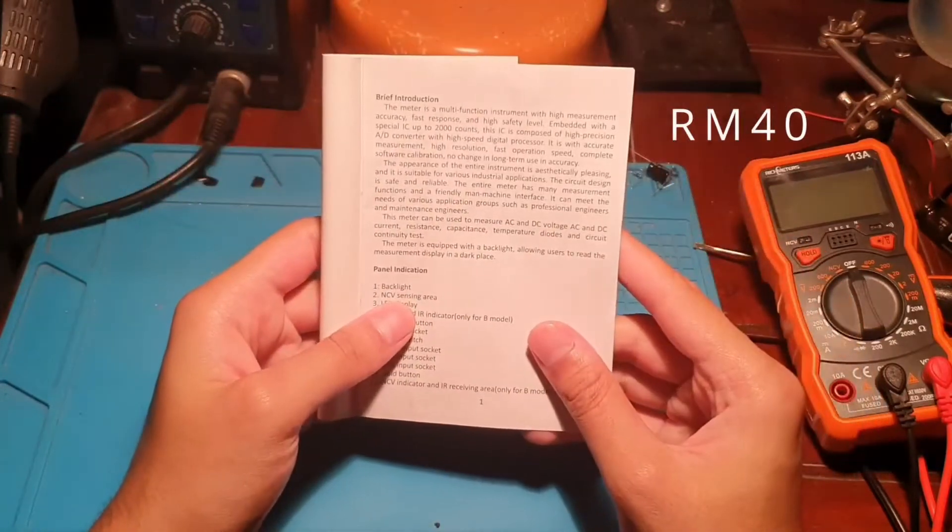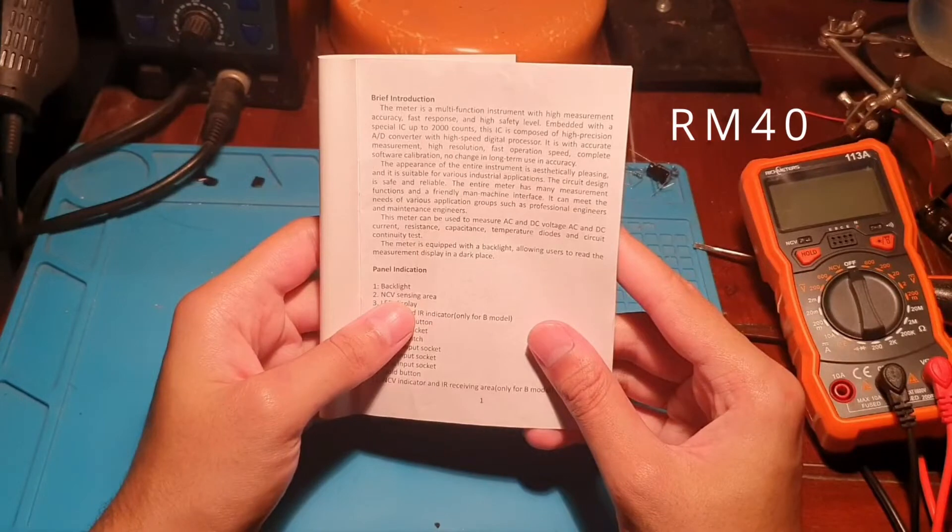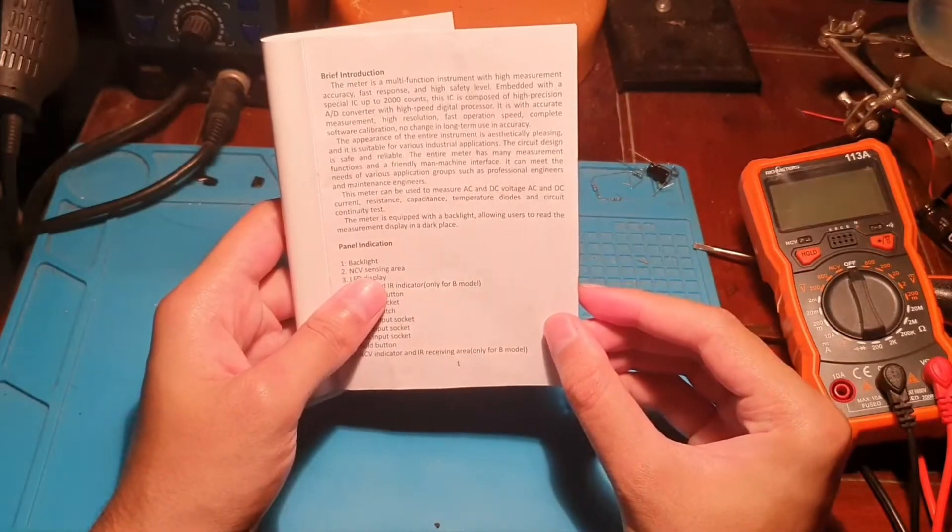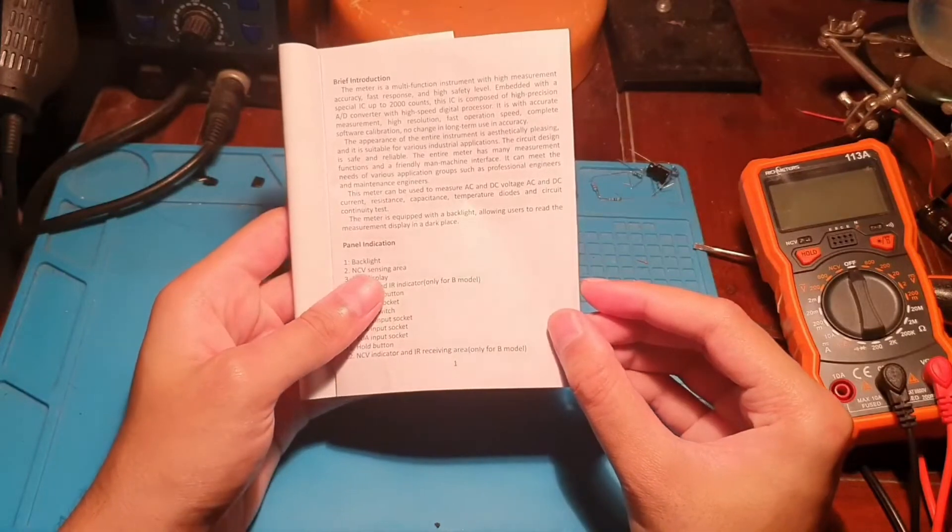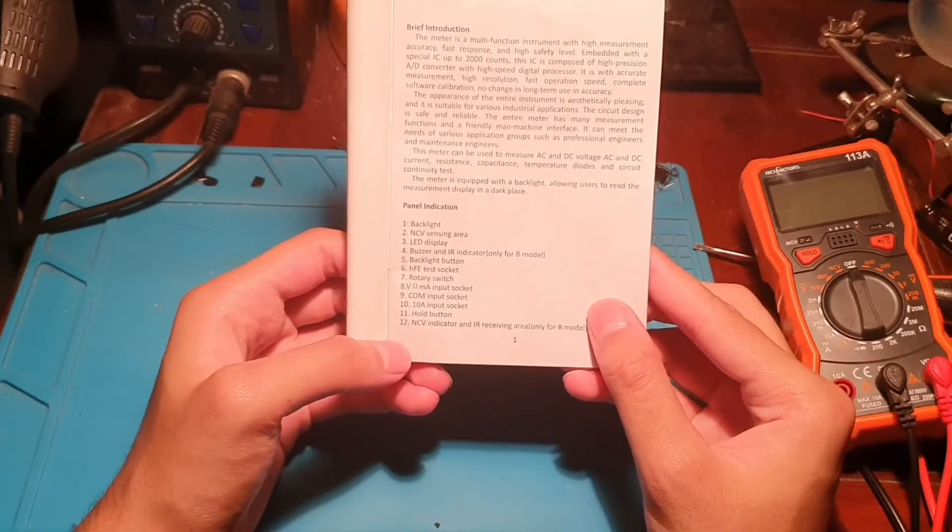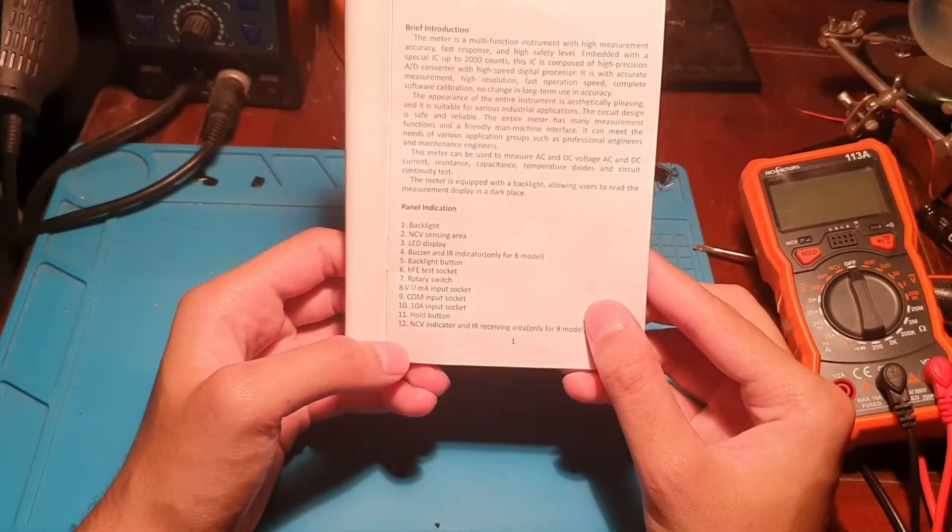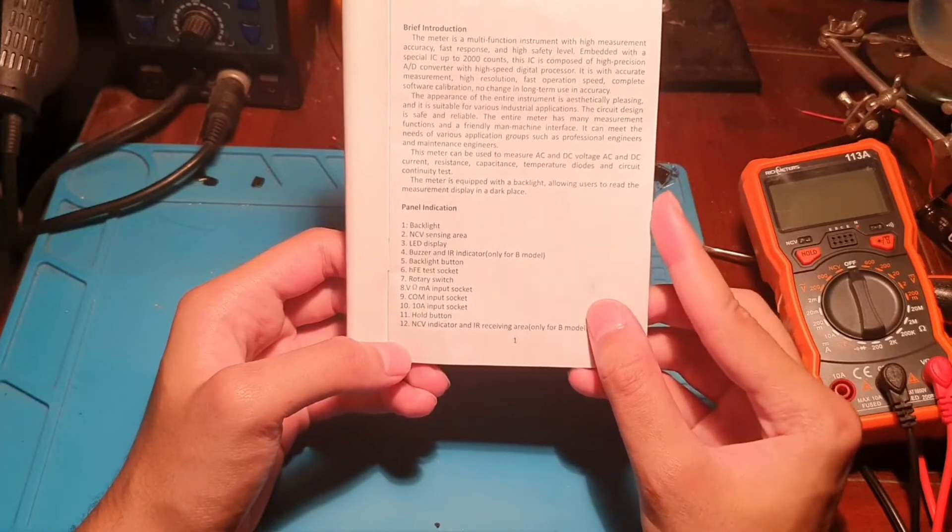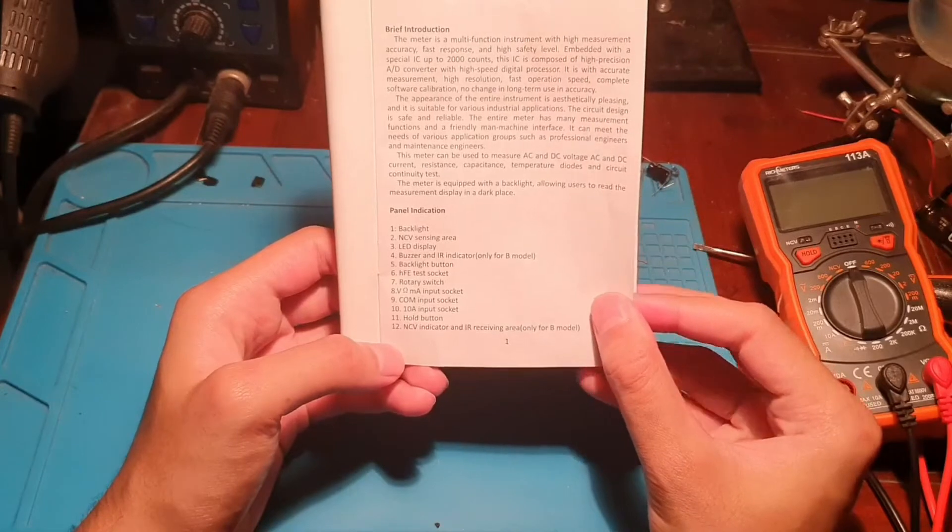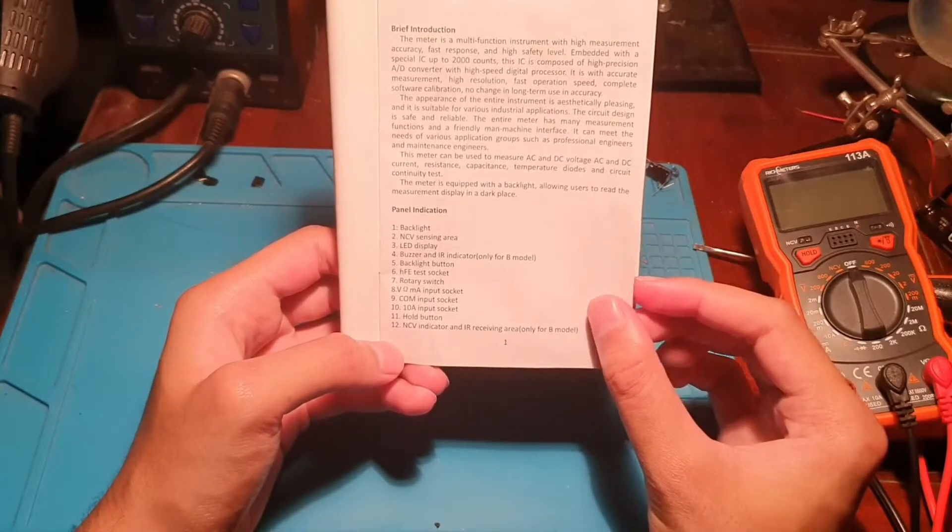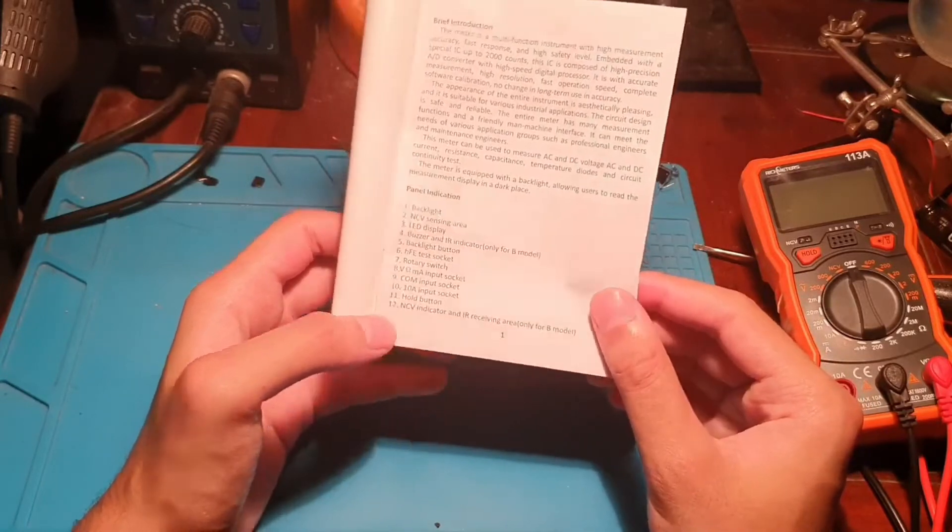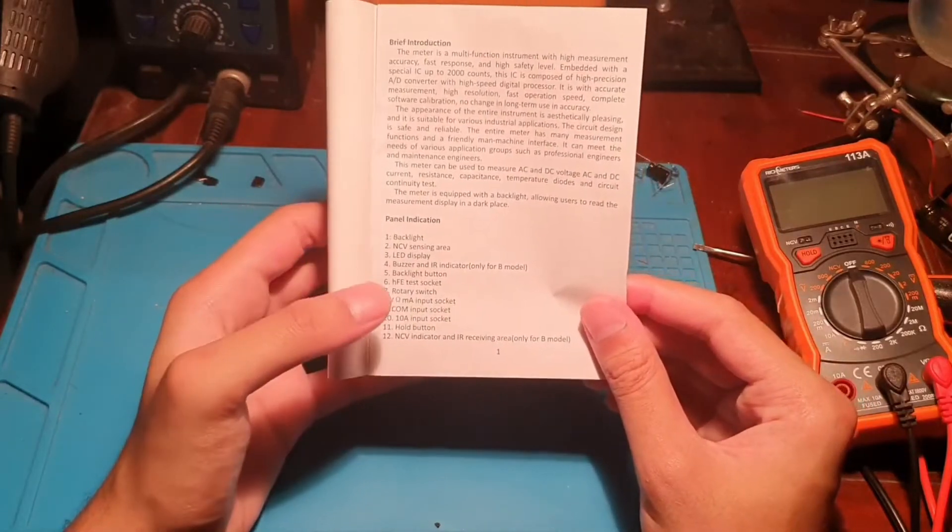The meter is a multi-function instrument with high measurement accuracy, high-speed digital processor. What it has: backlight, NCV sensing area, LED display, buzzer and IR indicator, backlight button, HFE test socket, rotary switch, voltage/ohm and milliampere input socket, COM input socket, 10 ampere input socket, hold button, and the NCV indicator and IR receiving area only for the B model.